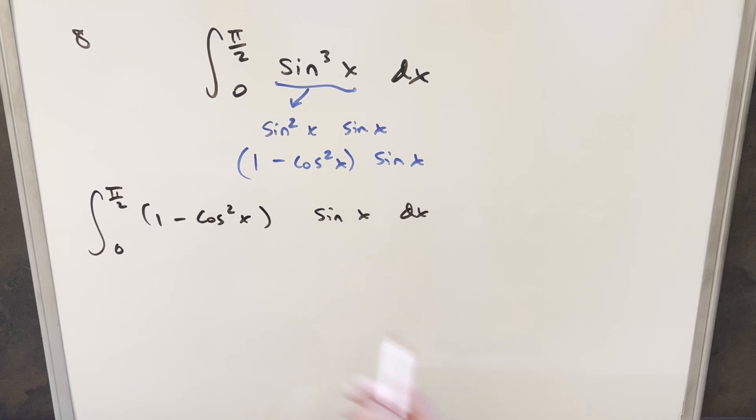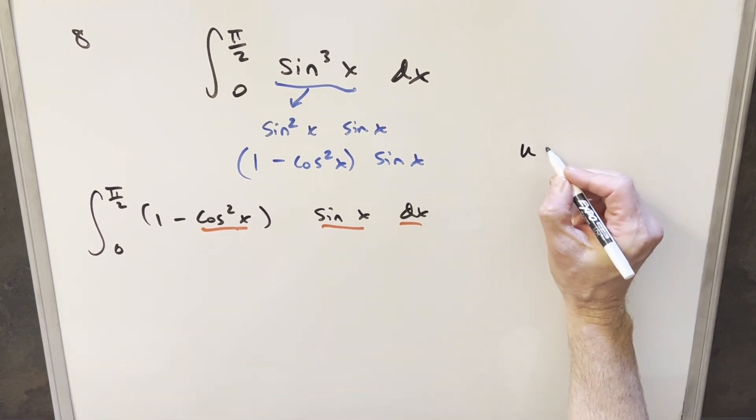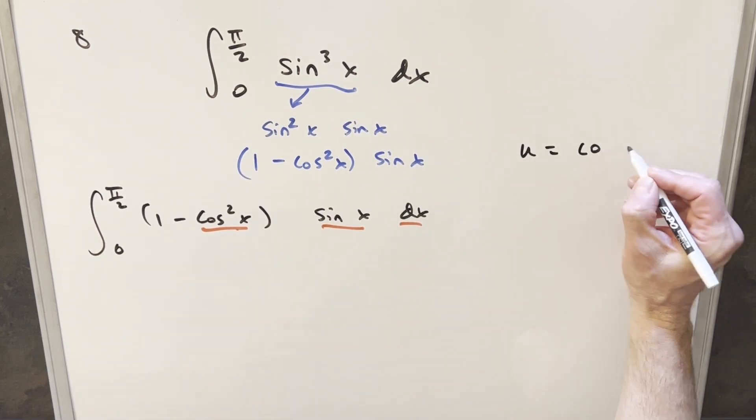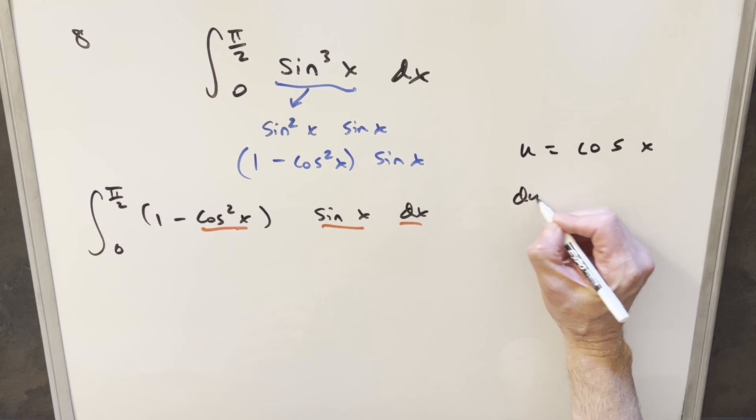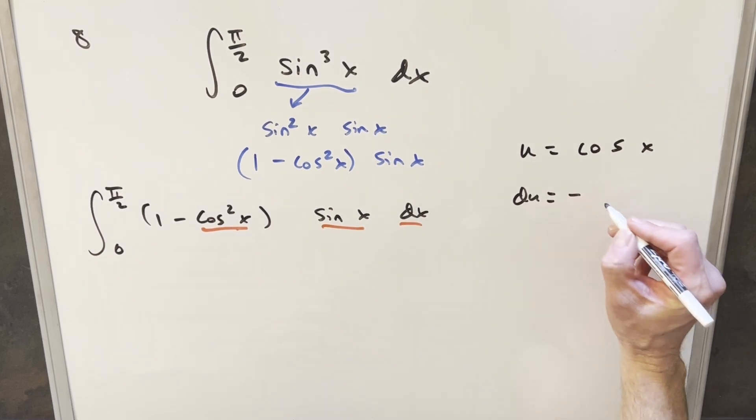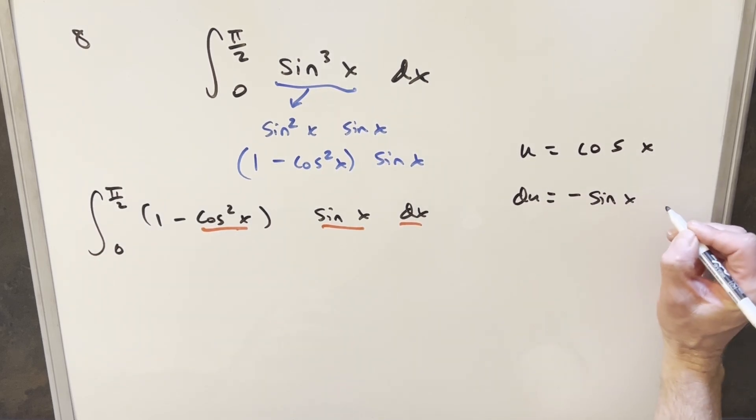Now we're in good shape for a u-substitution because I have cosine here and sine dx here. That's going to work out well. For my u, I'm going to do u = cos x. Taking the derivative, du = -sin x dx.